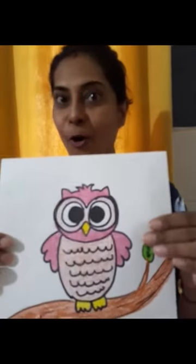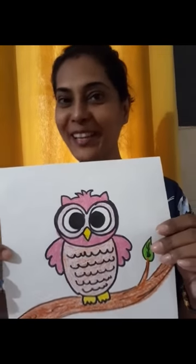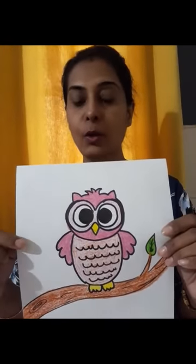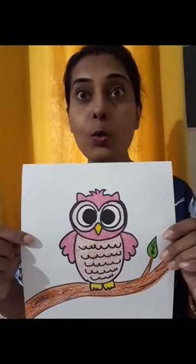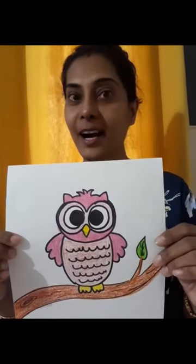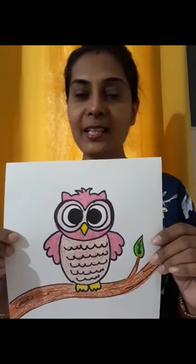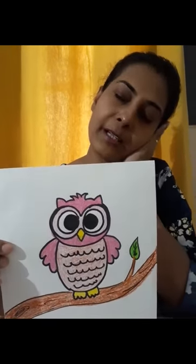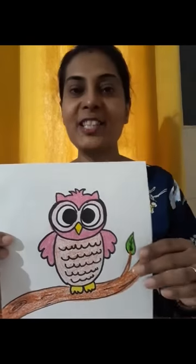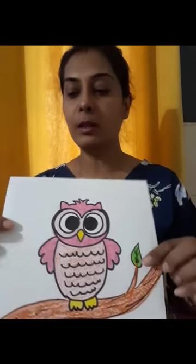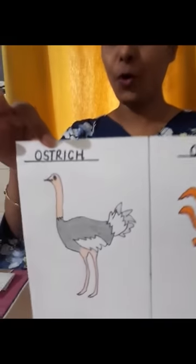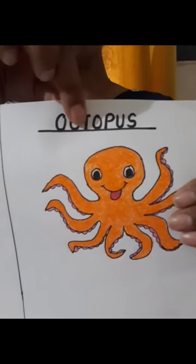O for — this you must be knowing — owl! O for owl. Owl keeps awake in the night and sleeps during the day. Yes children: O for owl, O for ostrich, O for octopus, O for onions.